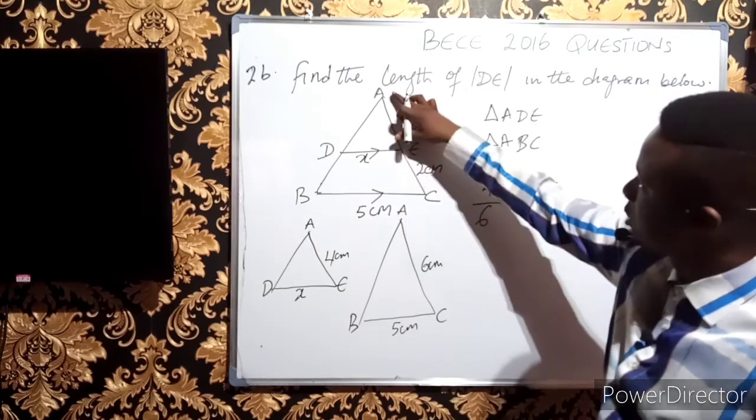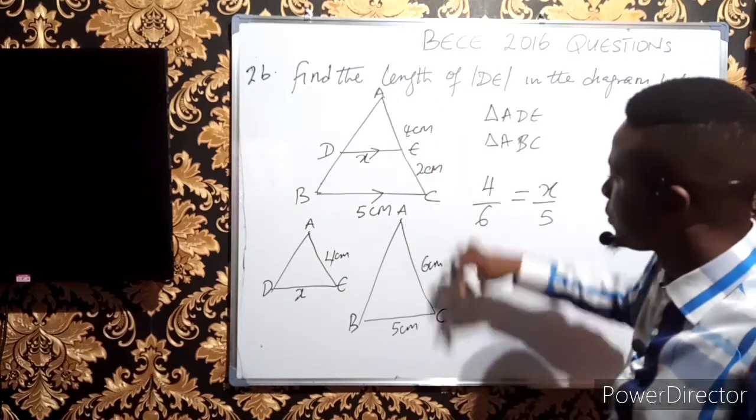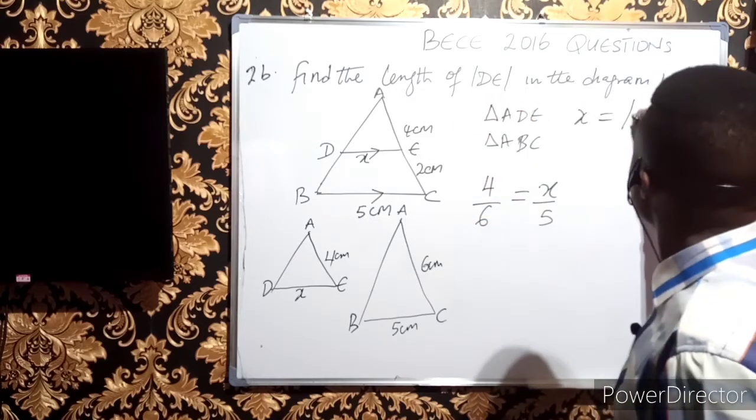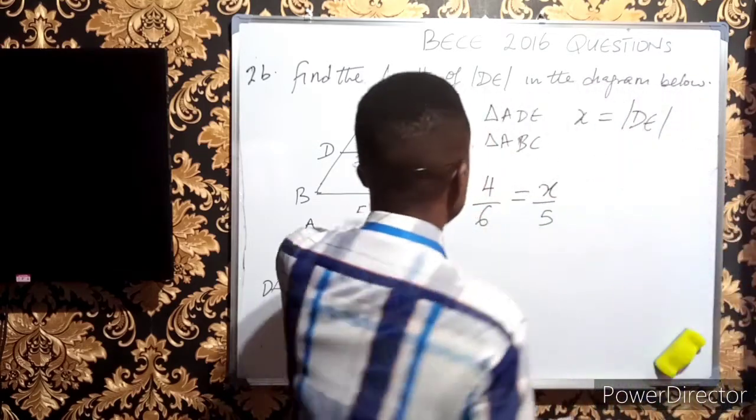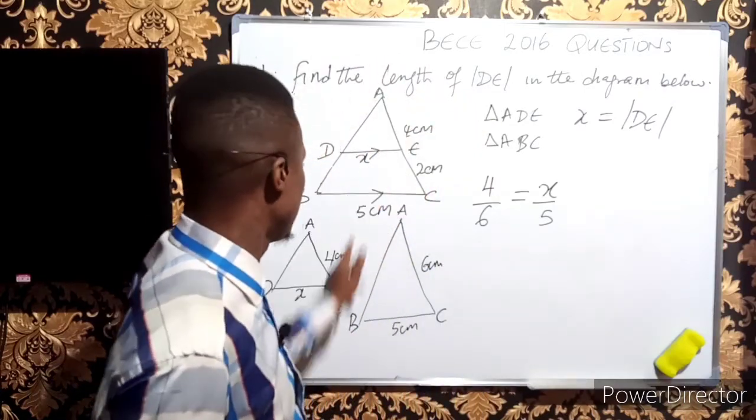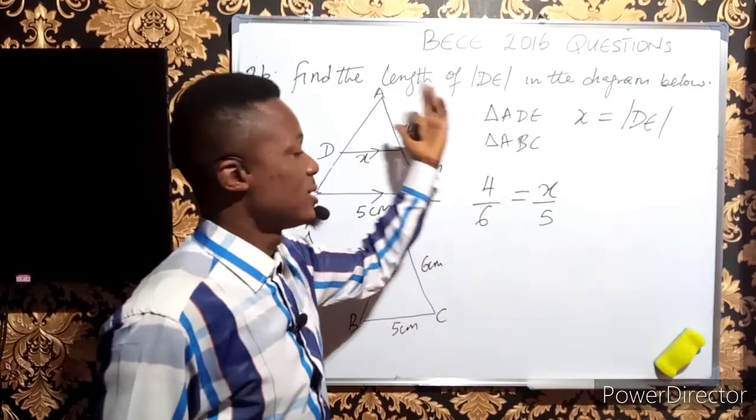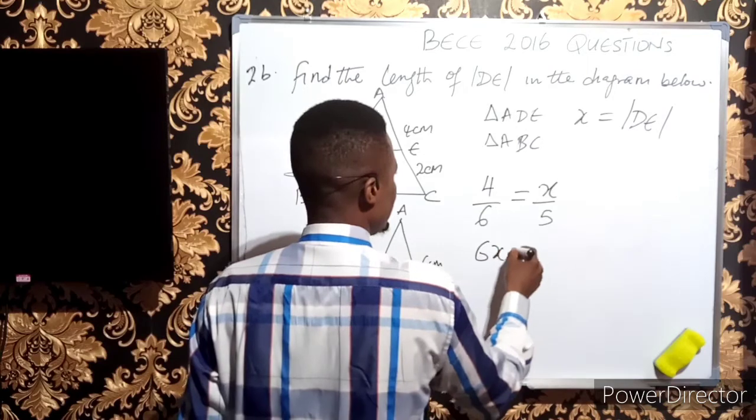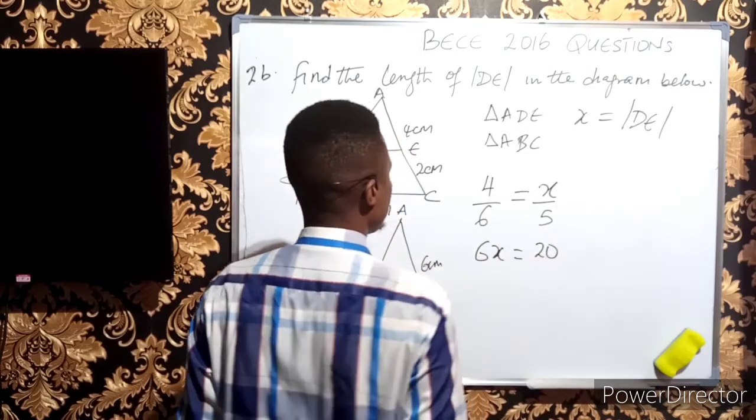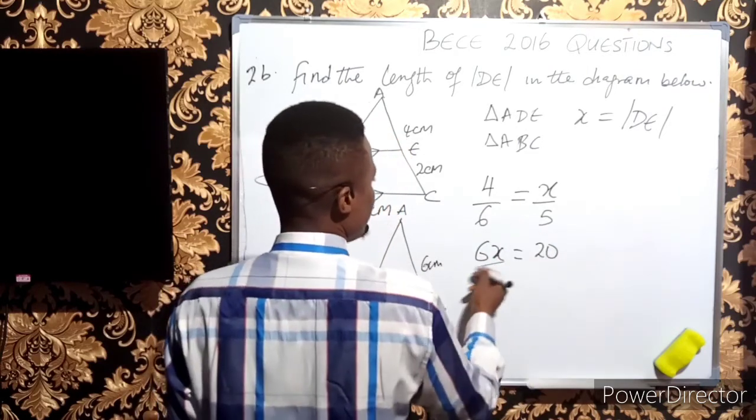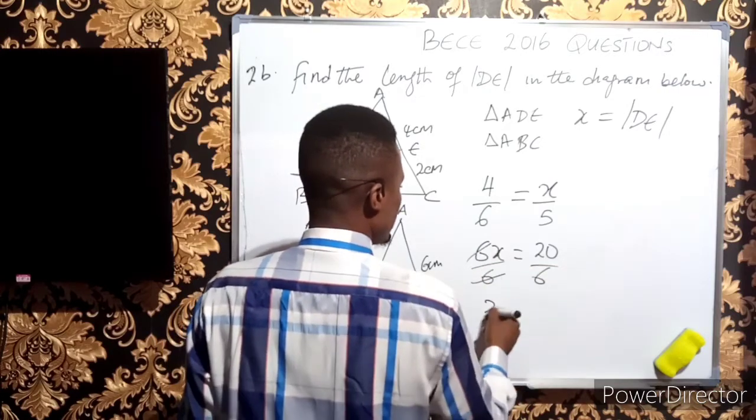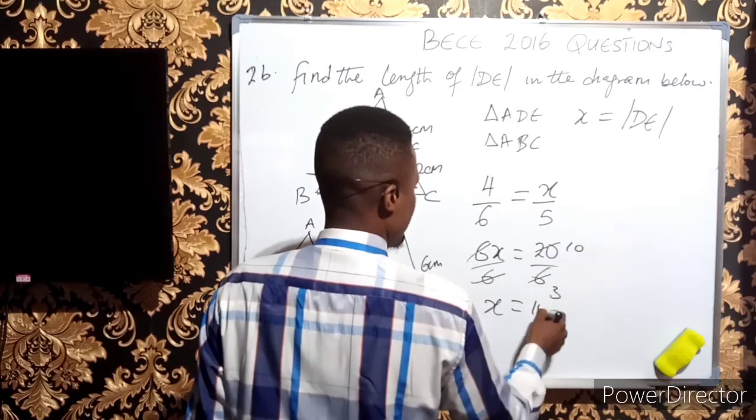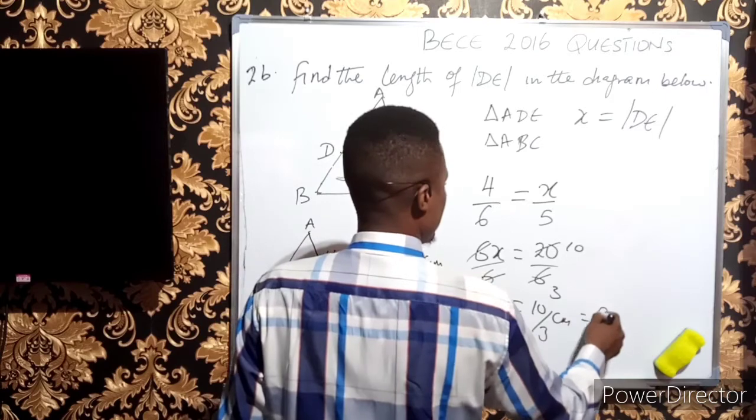Cross multiplying: 6x = 20, because 4 × 5 = 20. To get x, I divide by 6: x = 20/6. Simplifying: 2 goes into 20 ten times and 2 goes into 6 three times, giving 10/3 cm, which equals 3⅓ cm.